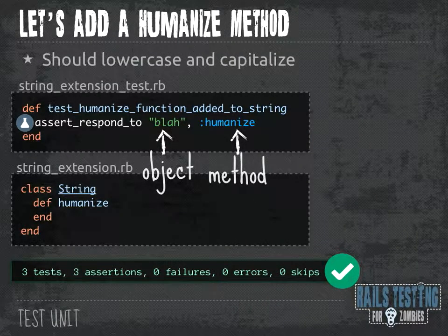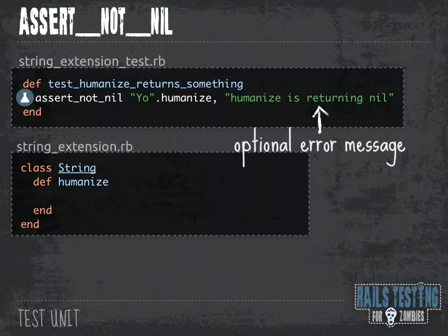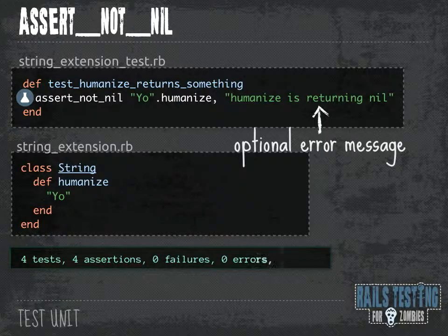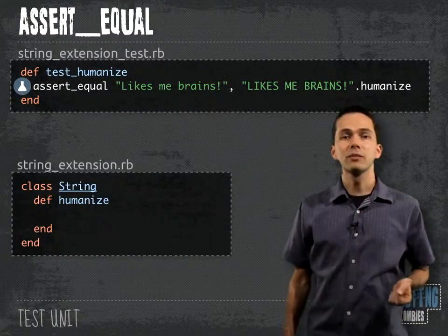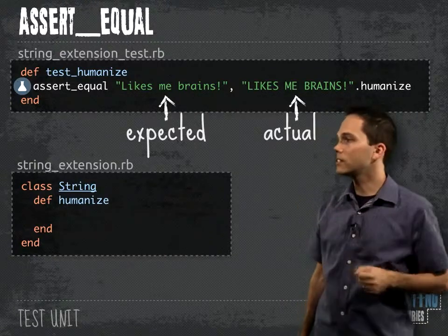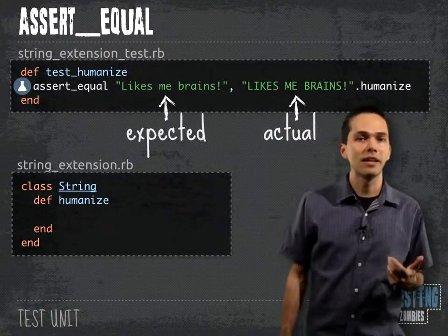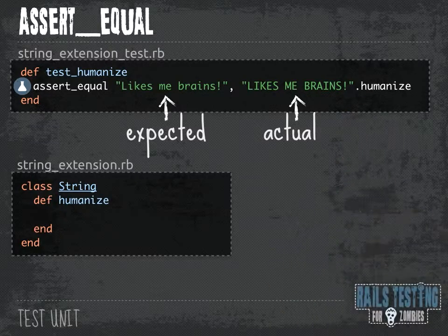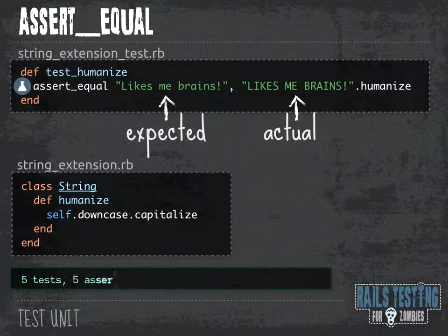Now we can write another test: test_humanize_returns_something. We're going to use assert_not_nil — asserting that this method returns something that isn't nil — and give it an optional error message so that if it errors out we have a better idea of what went wrong. Then in our string extension class, we write just enough code to make it pass. Next, we use assert_equal, which takes two parameters — the first is what we expect to receive, and the second is the actual call. We call the humanize method on a string and want these two to match. Inside the humanize method, all we have to do is call .downcase.capitalize, run our tests, and now they pass.